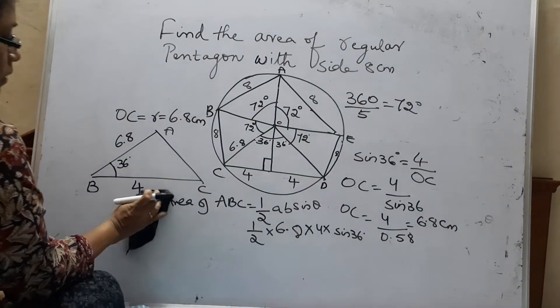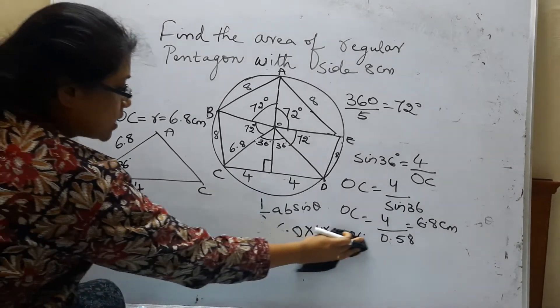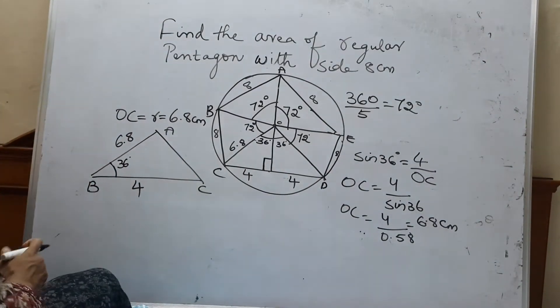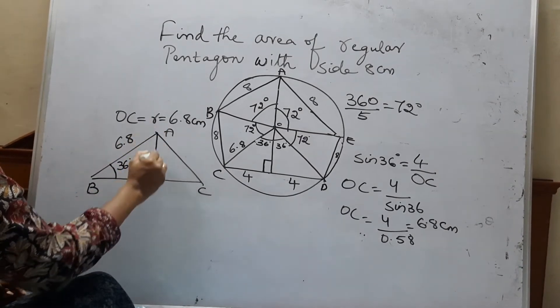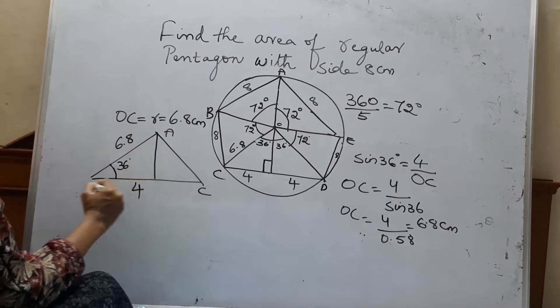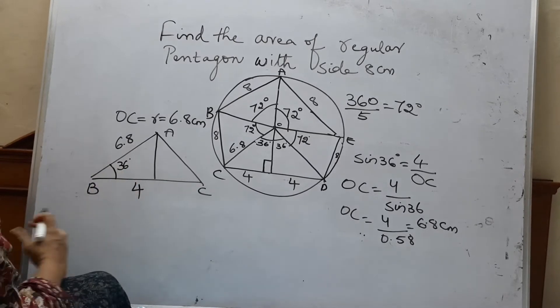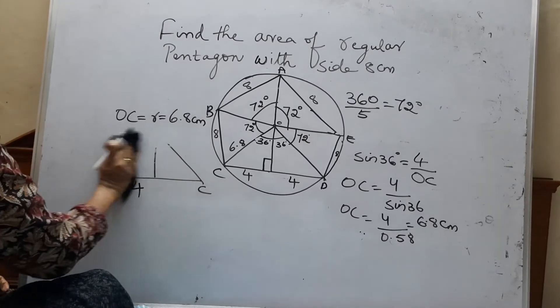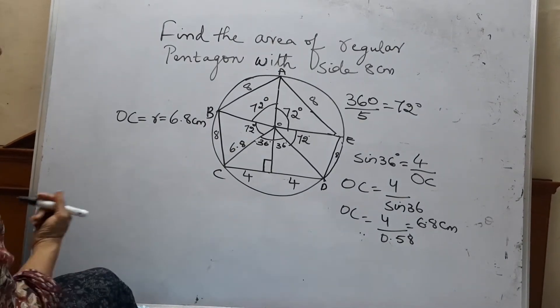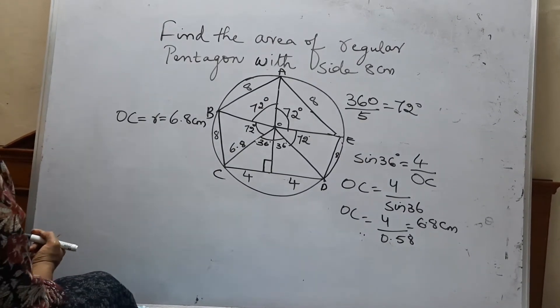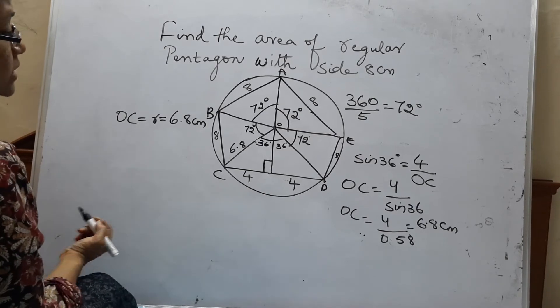It is half into base into height only. But you have a derivation also for it. I am not teaching that now. You can use the Pythagoras theorem and find that area of a triangle where the included angle is given. Area of a triangle where the included angle is given is half AB sine theta.